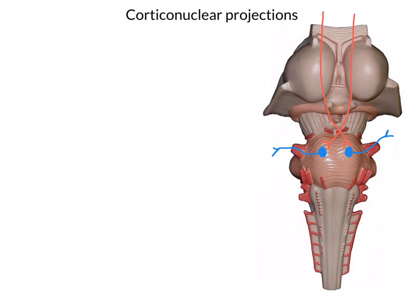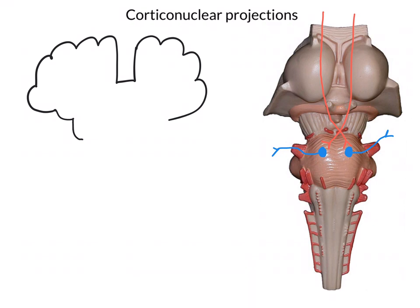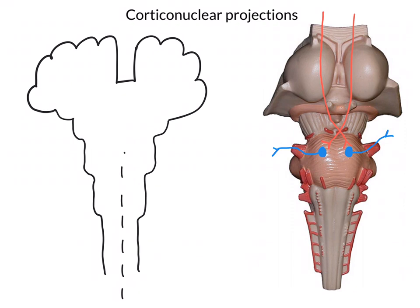To do that, we're going to draw our usual representation focusing on the cerebral hemispheres and the brain stem. Here is one hemisphere and there's another. Here's the midbrain, the pons, the medulla, and the top of the spinal cord. Because we're going to think about pathways crossing over, we're going to draw in the midline. And I'm going to focus on just three cranial nerves: the trigeminal, the facial, and the vagus.